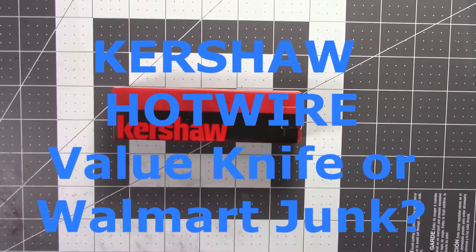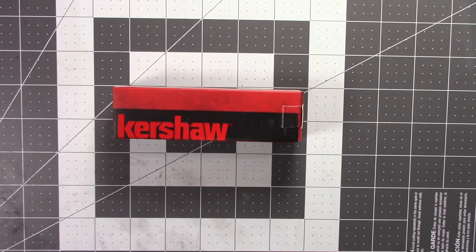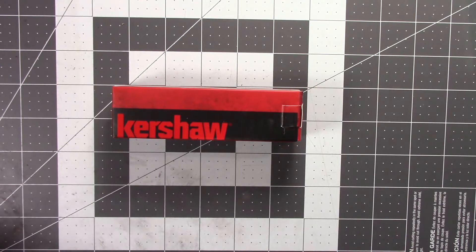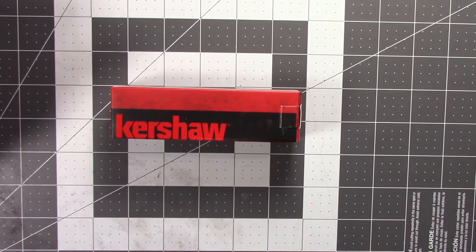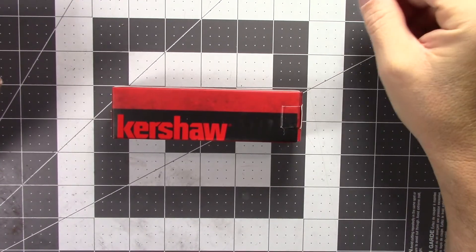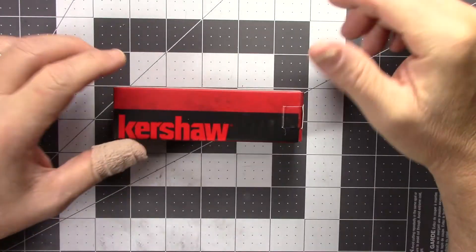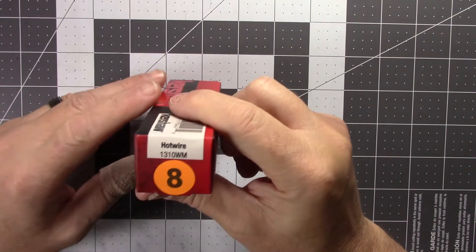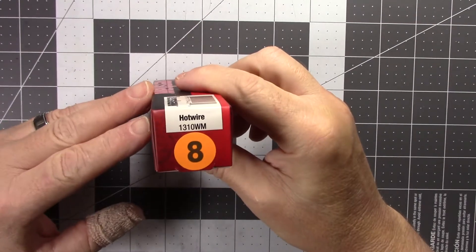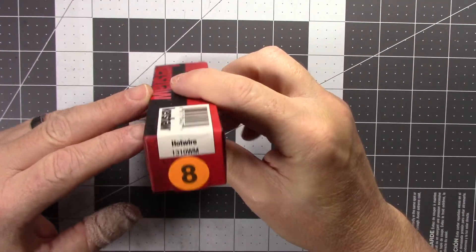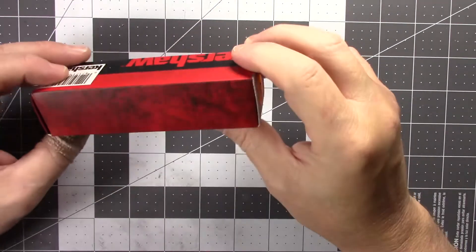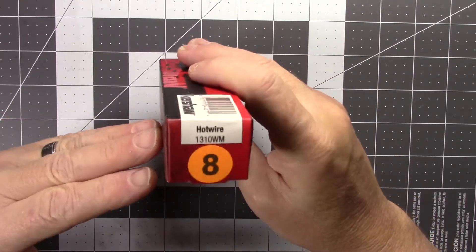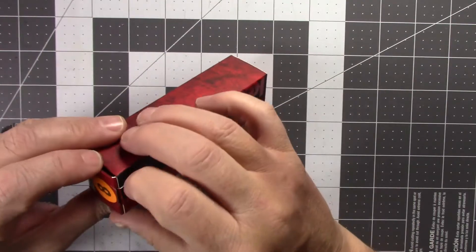Hey guys, how y'all doing? Good, good. Glad to hear it. Alright, slide your chair up and let's take a look at this. You can see we've got a Kershaw. What kind of Kershaw do we got? Well, we have a Hotwire part number 1310 WM, which WM stands for Walmart. And you can see it's number 8 in their case.